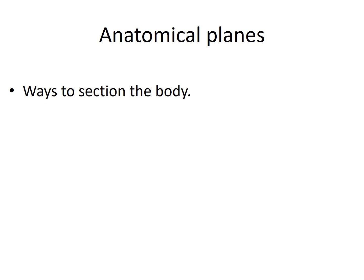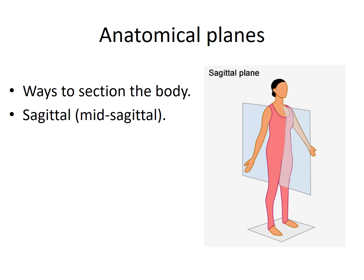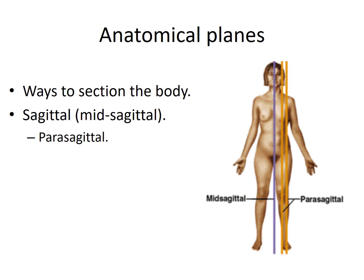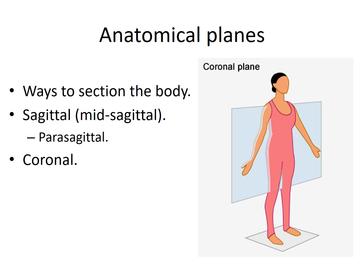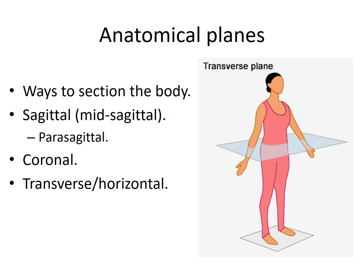Another way to organize the body is by anatomical planes, which are ways that we can section the body. A sagittal or midsagittal plane cuts the body into two even halves. Parasagittal cuts the body into uneven halves, as shown in the orange lines in the figure. A coronal plane cuts the body into anterior and posterior portions. A transverse plane cuts the body into superior and inferior portions.